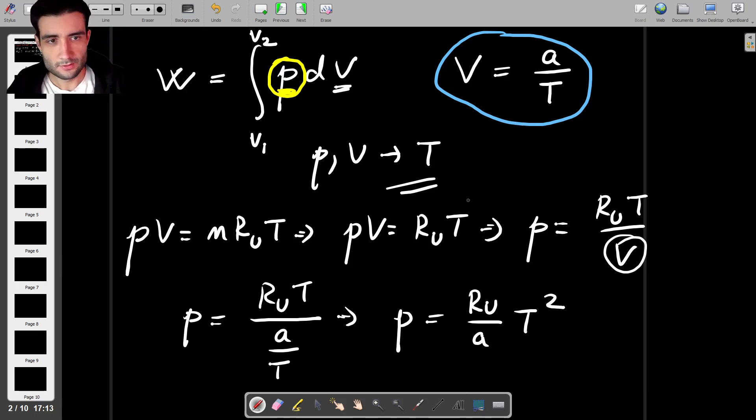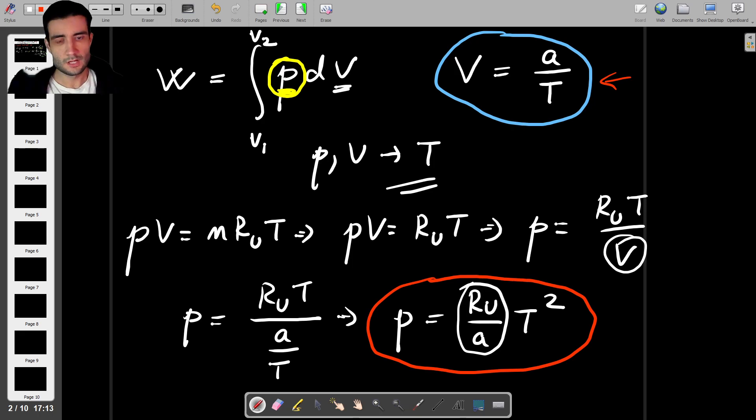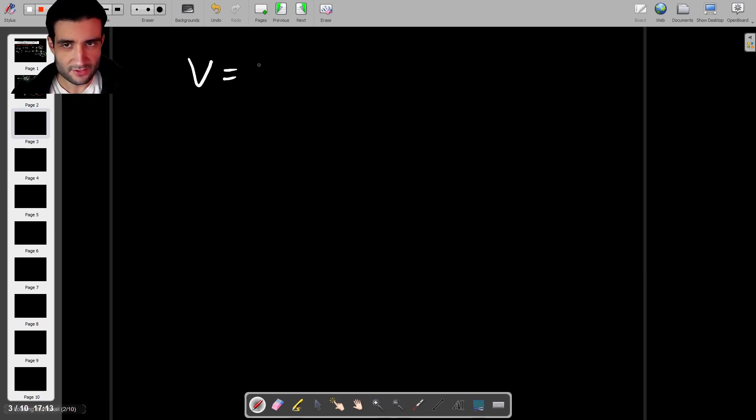Okay so we have volume in terms of temperature, we have pressure in terms of temperature, and RU over A is just a constant. So let's try to put everything in here but there's only one thing left to do before we can do that which is we have to express this dV in terms of temperature as well. So we have V as A over T but then we have to find what the differential of V is as well. So if we apply just some basic differentiation rules we'll see that this is minus A over T squared dT.